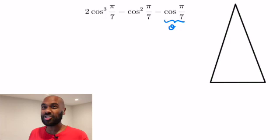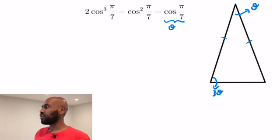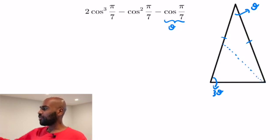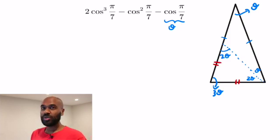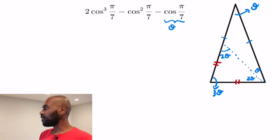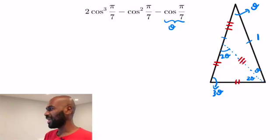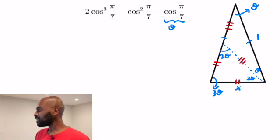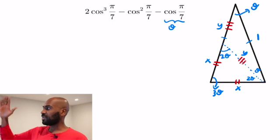Now we're going to see how to do this completely geometrically, which is really neat. We let θ = π/7 and draw an isosceles triangle where one angle is θ and the two base angles are 3θ. We then split one of those 3θ angles into a 2θ and a θ piece. Since θ = π/7 means 7θ = 180°, this creates several isosceles triangles with sides we can label x and y, scaling the large triangle's side to 1.